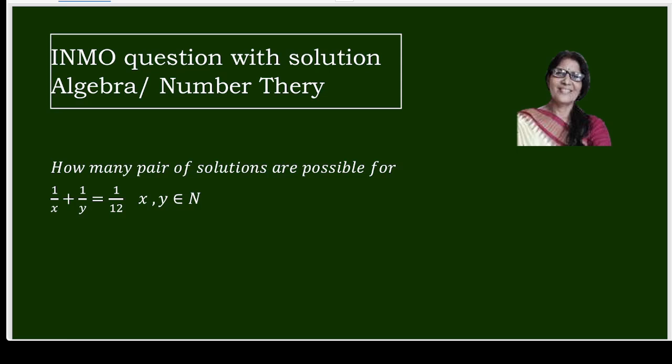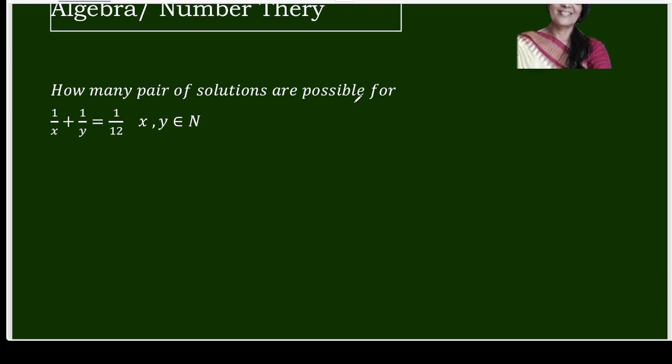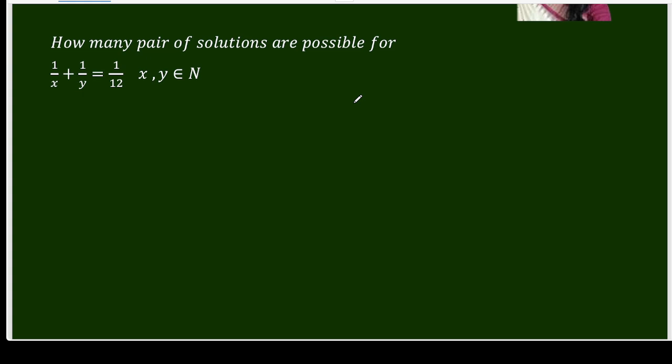Hello friends, I am Pratima. I welcome you all to my channel. Today I have taken one question from Math Olympiad. The question is: how many pairs of solutions are possible for 1/x + 1/y = 1/12, where x, y belongs to natural numbers? Let's proceed.